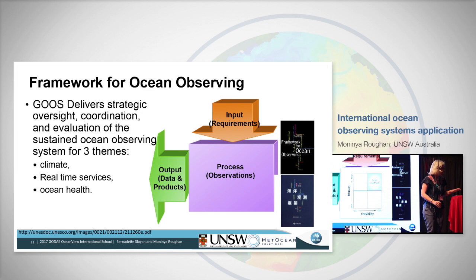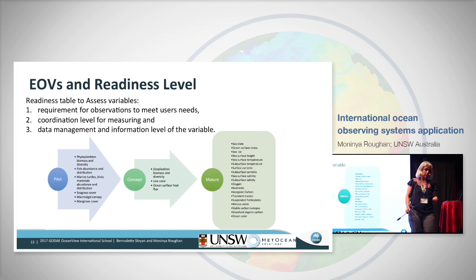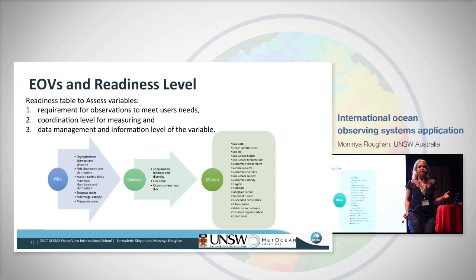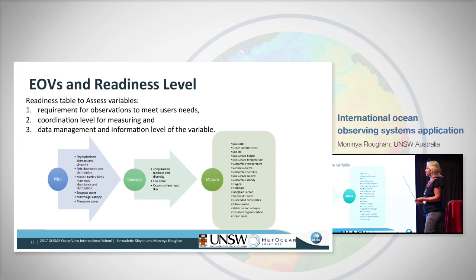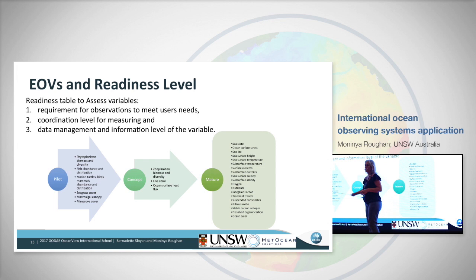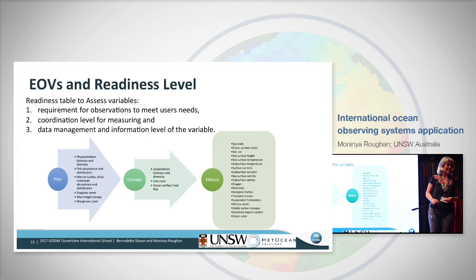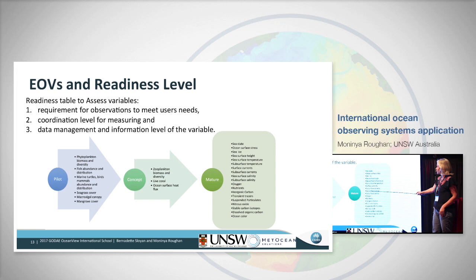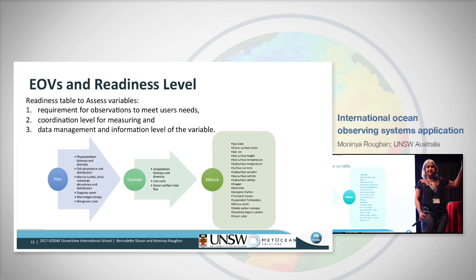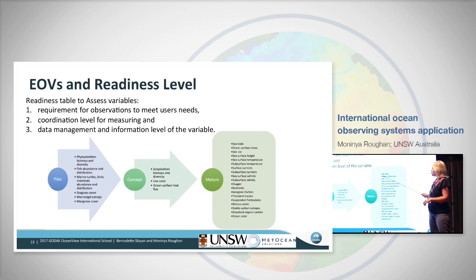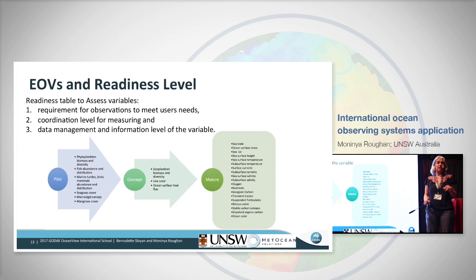A lot of effort has been put into developing new sensors and technology, but that's not necessarily where you should start if you're designing a global ocean observing program. If you want to measure the ocean in a systematic, sustained way with high impact and high feasibility, you might want to go for mature things first. Essential ocean variables have been split into three levels of readiness: mature, concept, and pilot. Some mature variables include sea state, ocean surface stress, sea ice, sea surface height, sea surface temperature, and subsurface temperature.